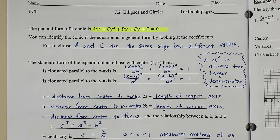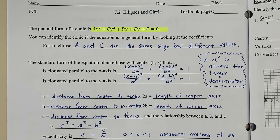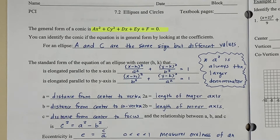I would like for you to pause the video, take a couple of minutes, and read through some of the characteristics of an ellipse, including general form, standard form, and what the different variables a, b, and c represent. When you are finished, push play, and we'll begin looking at example one.